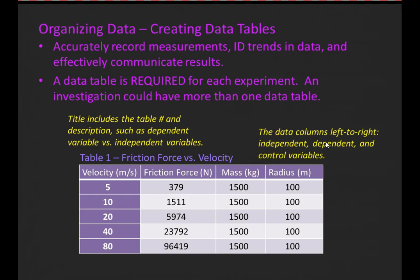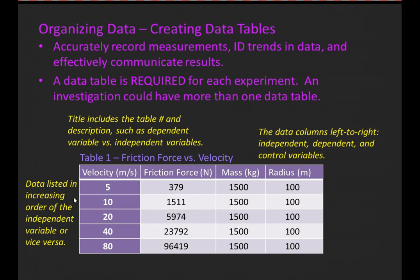Next, let's take a look at our data columns. It does matter what order they are in left to right. The independent variable comes first, then the dependent variable, and then after that come the control variables. Going down the rows, it also matters in what order you list the data. We want to list the data in increasing order of the independent variable—notice it goes in order from the lowest trial at 5 meters per second to the highest trial at 80 meters per second. You could reverse this and go from highest to lowest, but it has to be in order.